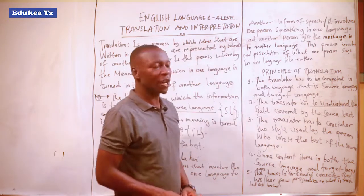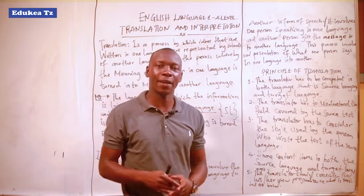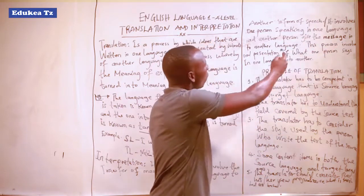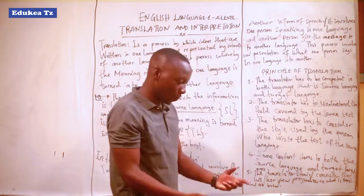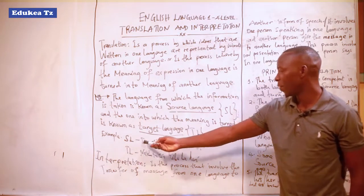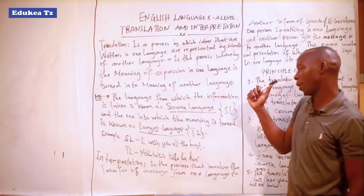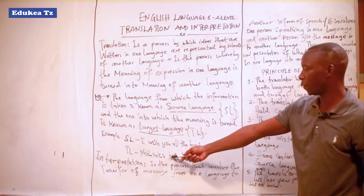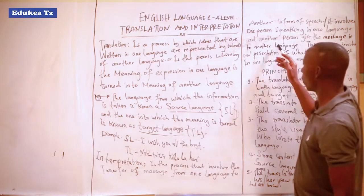Speech can be the conversation of a particular group of people who share the same culture, live in the same geographical location, and have their history. In interpretation, it involves one person speaking in one language and another person giving the message in another language. For the translation example, I wrote it down, but for interpretation, I have not written an example because interpretation uses the word of mouth.